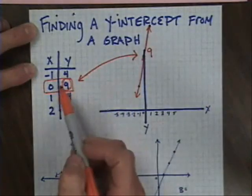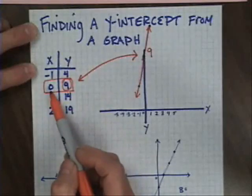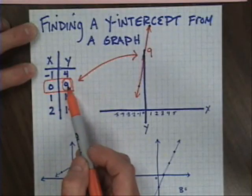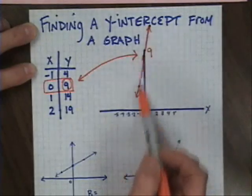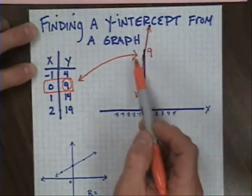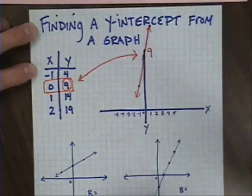What that suggests to me is whether I see a table of values and I find a 0 in x and I choose my y, or whether I'm looking at a graph and looking for the point where my line touches the y-axis, I can find my y-intercept.